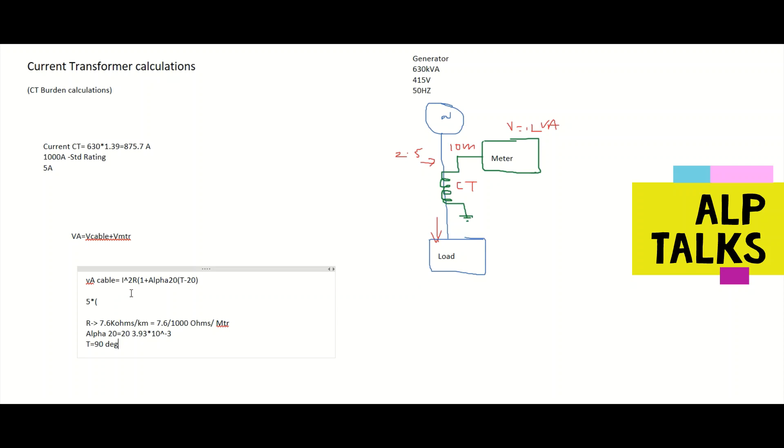So let's calculate VA of the cable. So 5 into I square R is 5 times the resistance value. This is per meter. We have 10 meter of cable. So let's go to the bracket portion. So what is the alpha here? Alpha is 3.93 into 10 power minus 3. Then what is the temperature? Temperature is 90 degree minus 20. So let's close the bracket. So we will get 2.4227. This is the VA of cable.